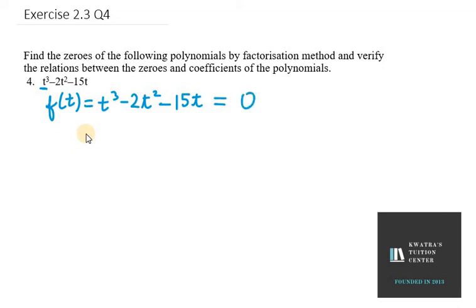Now we need to find zeros of same. So again we need to equate it equal to zero. Now you can see very well that here we have t common in all the terms. So what we will do is we will take t common first from all the terms.